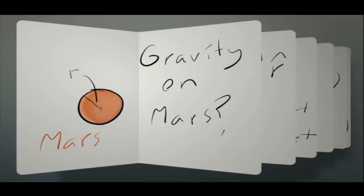Let's say that we want to figure out the acceleration due to gravity on Mars. The first thing I'll do is draw a circle which represents the planet and then I'm going to label a variable that I think might be important which is the radius.